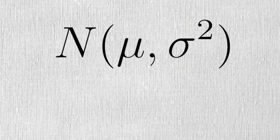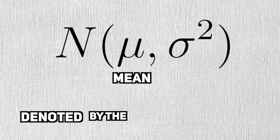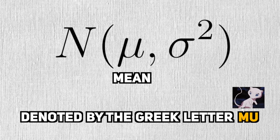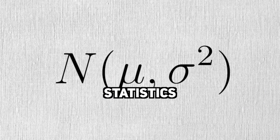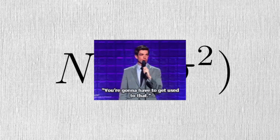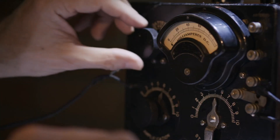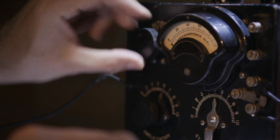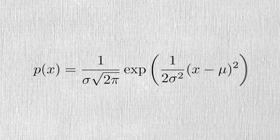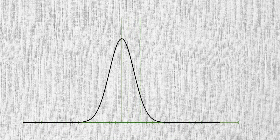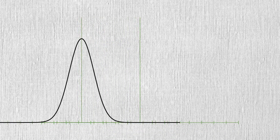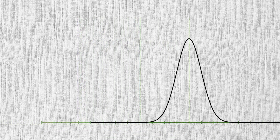One of these parameters is actually the mean I mentioned earlier. The mean is usually denoted by the Greek letter mu. You're going to see a lot of Greek in statistics, so get used to it. Using our tuning knob metaphor, the mean controls where the peak of the PDF is. There are no restrictions on the value the mean can take, so it can be as negative or as positive as you want.